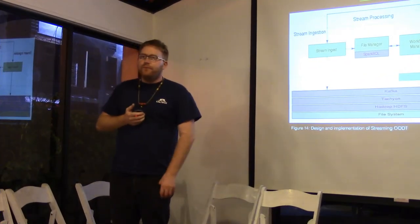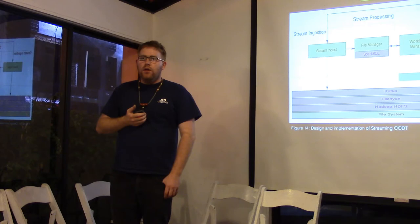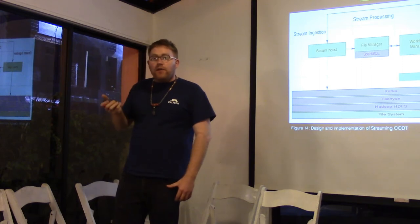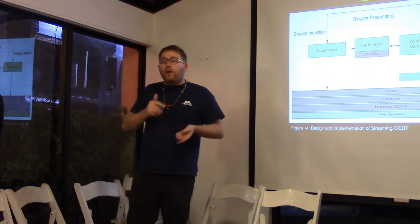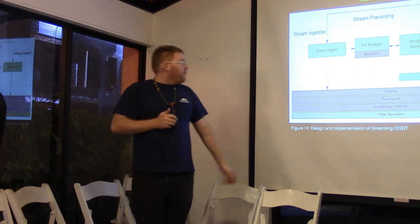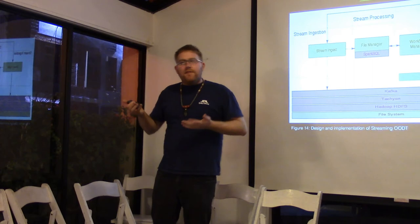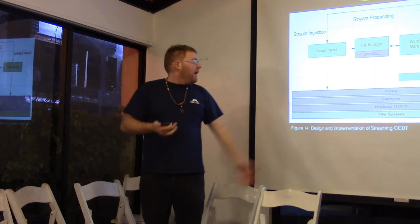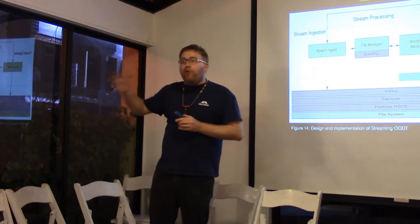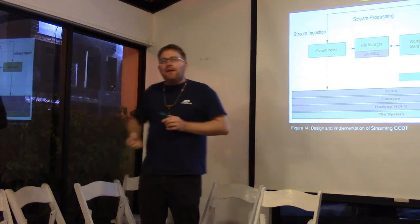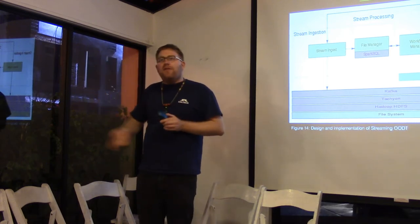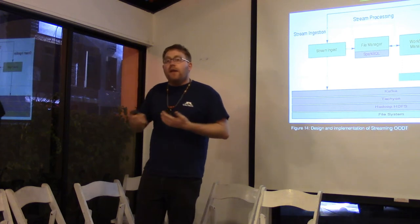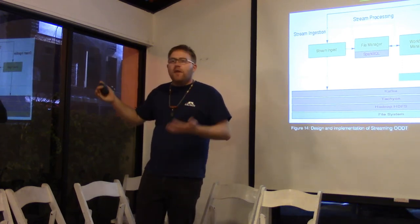Streaming data comes in, metadata goes to the catalog so you can search, find, and query for streams, and the actual data goes into Kafka for a user-defined length of time. This is OODT metadata, defined by the user per product type for querying and searching. The goal is to give you the same OODT functionality for streams, Spark data, or normal files — all stored the same way. The only difference between old file metadata and new stream metadata is the type field: one says stream, the other says file, but they're treated identically so you don't have to learn new technologies to handle streams.